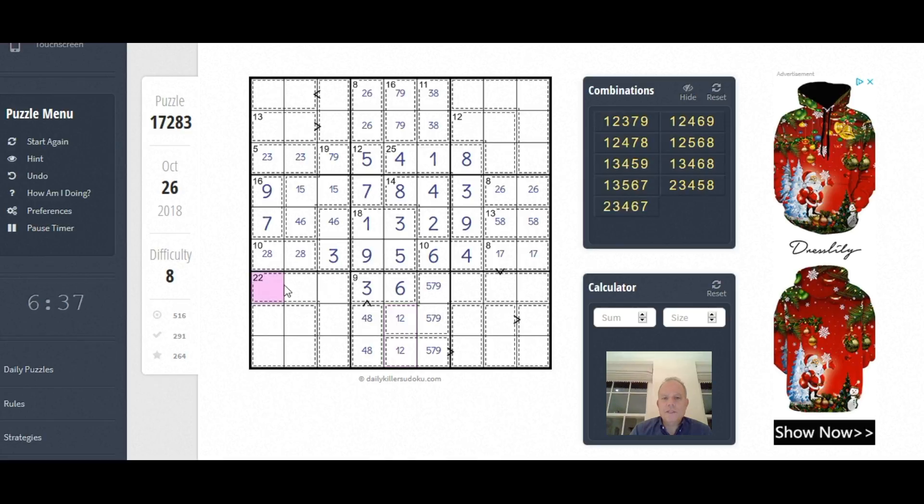This 22 box here, there are 9 possibilities, but quite a few of them include a 3. And we've got a 3 here, so they can't be 3, and a 3 here, so they can't be 3. So there's no 3 in the 22 box. So that eliminates quite a lot of those straight away, which is good. That's what we want to do.